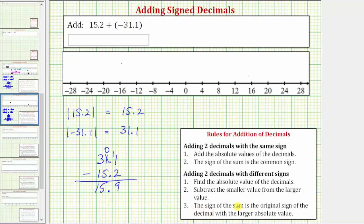So step three, the sign of the sum is the original sign of the decimal with the larger absolute value. So because negative 31.1 has the larger absolute value, the sum is negative 15.9. And again, it should make sense this is negative because the negative 31.1 is outweighing the positive 15.2.